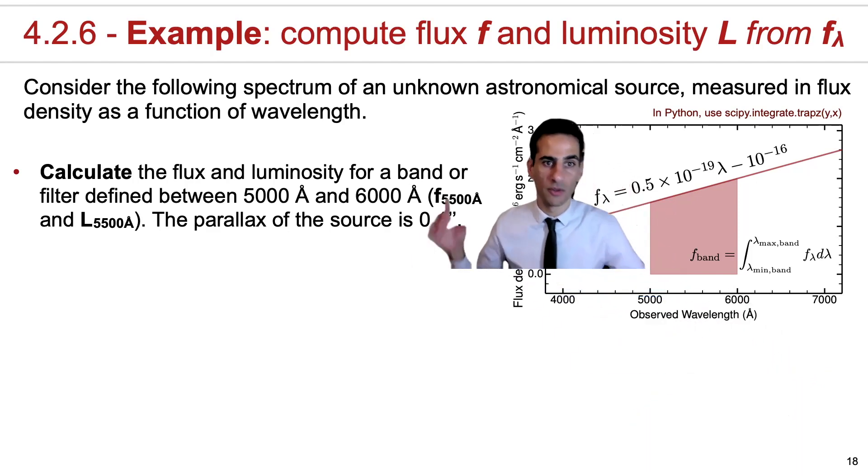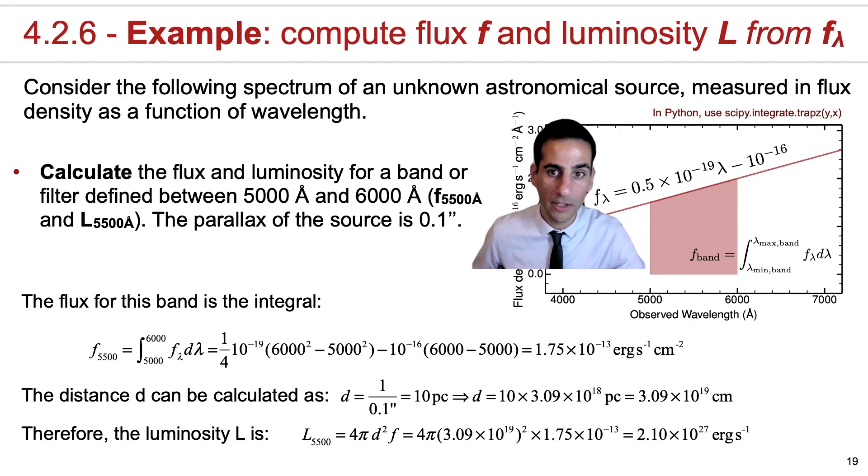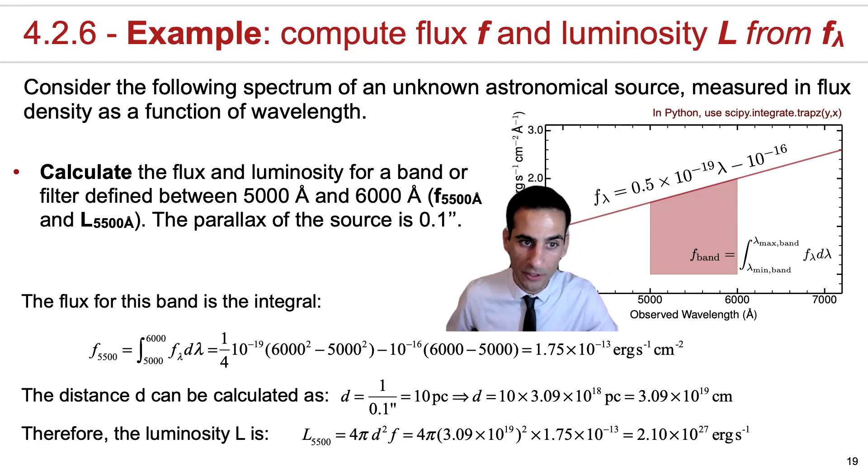Which is to calculate the flux and luminosity for a band or filter defined between the wavelengths that we have here, with the extra information that the parallax of the source is 0.1 arc second. So you need to go back to the first things we covered in astronomy 263 and put your knowledge together to actually achieve this.